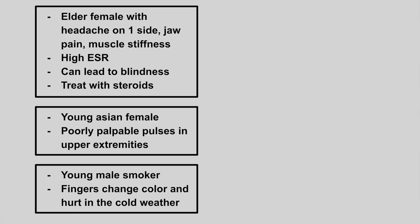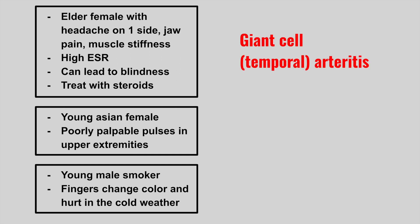The first patient is an elder female with a headache on one side, jaw pain, muscle stiffness, and a high ESR. It can lead to blindness, and we treat this condition with steroids. So this is giant cell temporal arteritis.